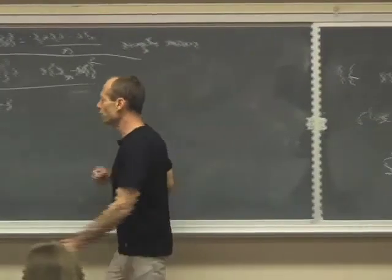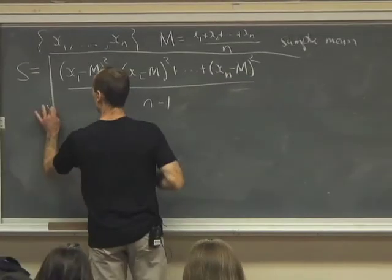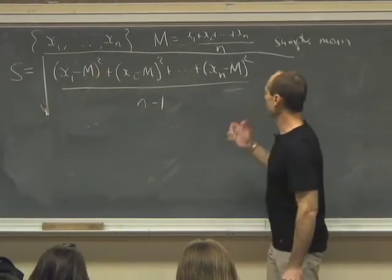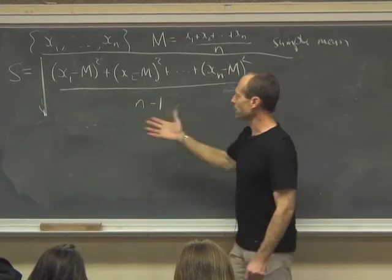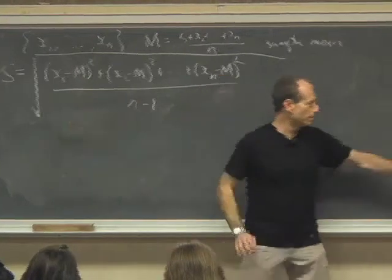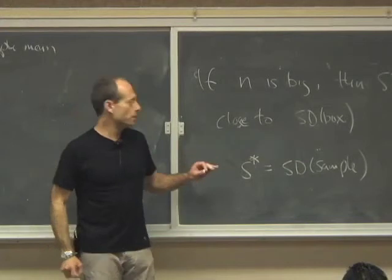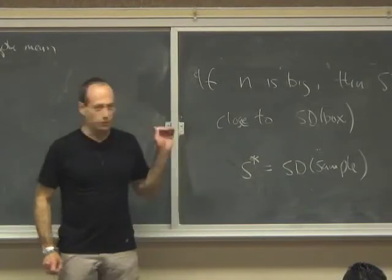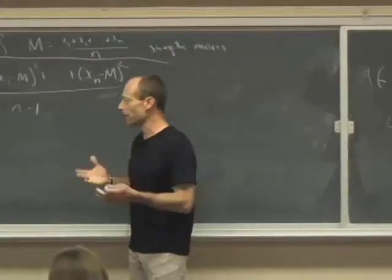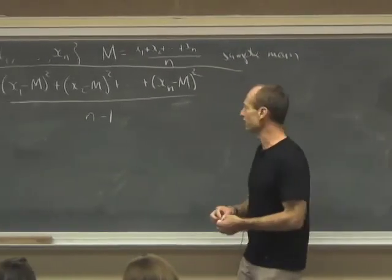Why would you want to estimate the SD of the box by this rather than by the SD of the sample? So there's a technical reason, but I'll try to explain the heuristic behind it.